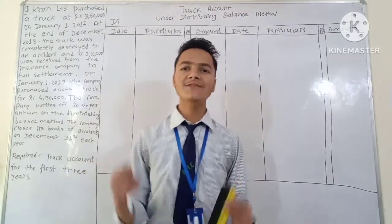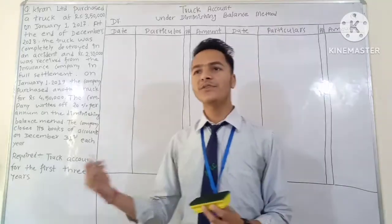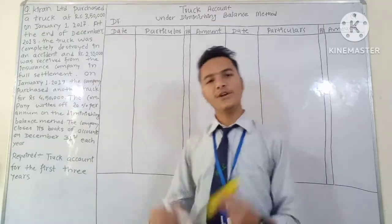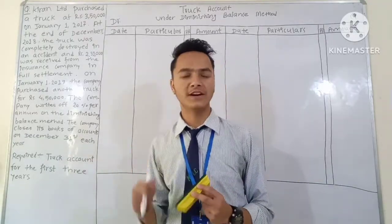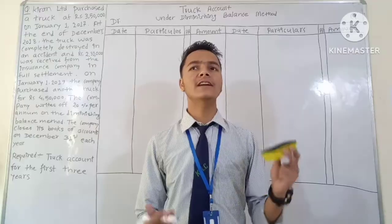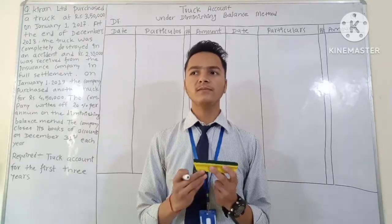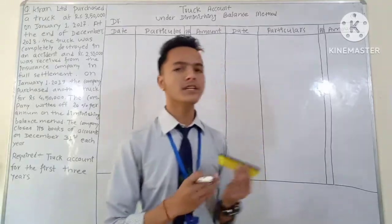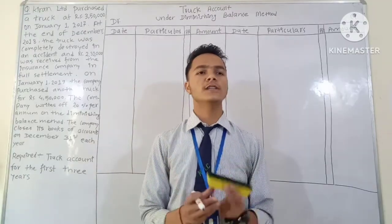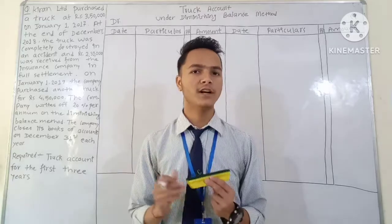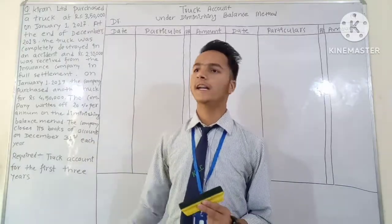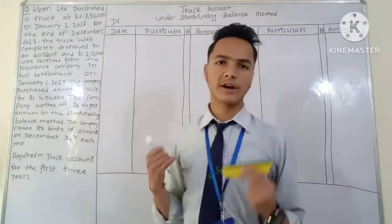Okay, accounting for long-lived assets — we have different methods of depreciation. Previously we have presented videos on the unit of activity method and the straight-line method. Today in this video we will cover the diminishing balance method, also called the reducing balance method or written-down value method. We will solve a numerical question and also discuss the difference between straight-line method and diminishing balance method.